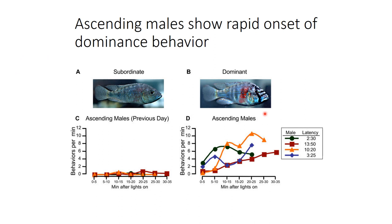Data showing four individual males monitored in five-minute intervals up to about 30–35 minutes shows that when the dominant male was still present, ascending males showed very few aggressive or dominance-like behaviors. The next day, after the dominant was removed, all males started showing dominant-like behaviors very quickly — six, eight, ten behaviors per minute — within that first 30 minutes. Clearly something is happening in the brain.